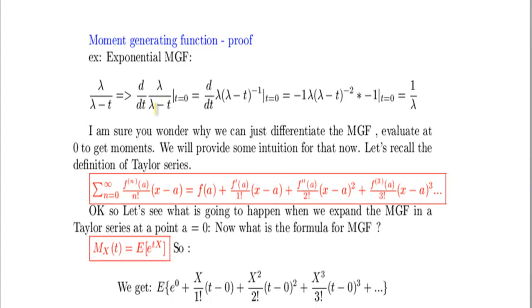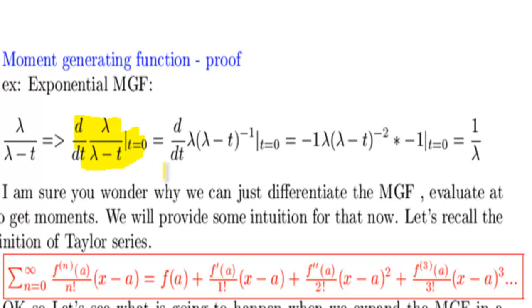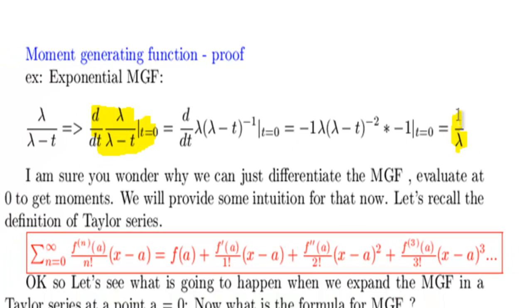In this video, we'll prove the idea behind the moment-generating function, i.e. the most important property, which is when we differentiate the moment-generating function and evaluate it at zero, we are getting raw moments.